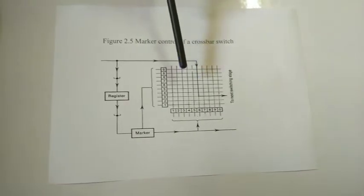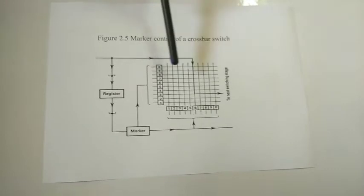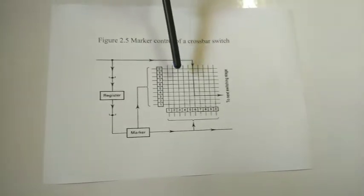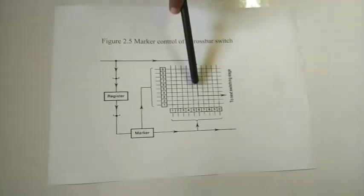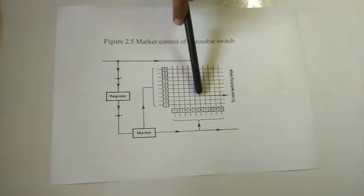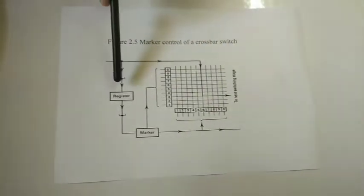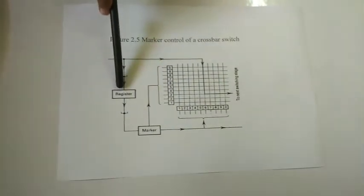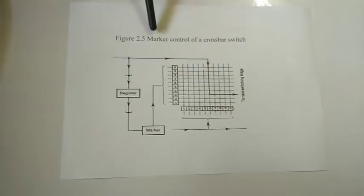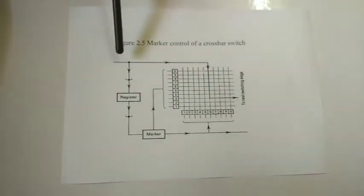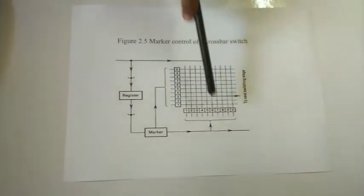For that purpose, the crossbar switch is not an intelligent system — the marker system will actually do everything. The select magnet and the bridge magnet work based on the marker. Suppose assume that one line is connected: the horizontal line is coming from 3 and the vertical line is 6. These two lines are marked by the marker and stored in the register. This shows that the marker is an intelligent system. A slight current flows through this, and it will connect the third line to the sixth line.